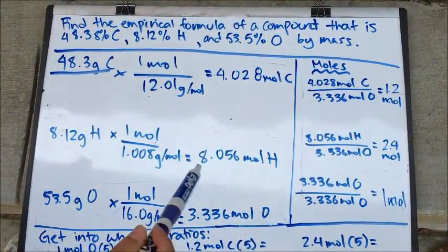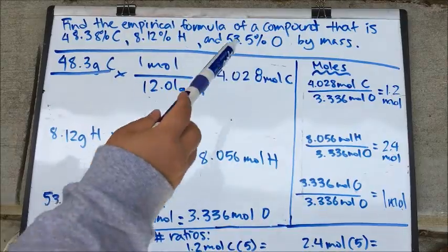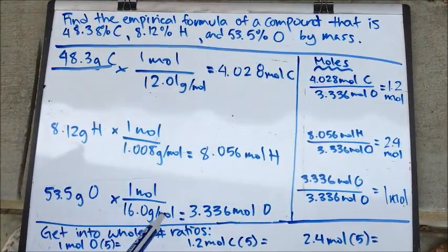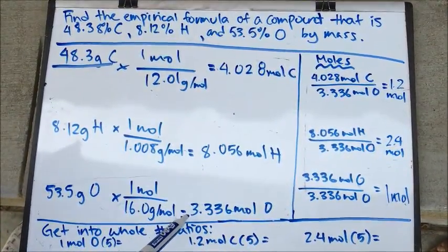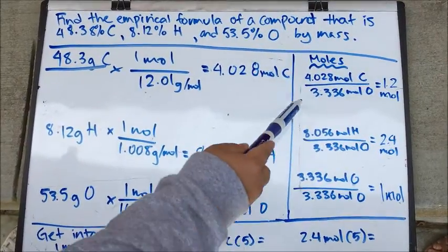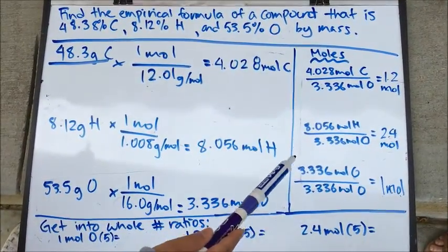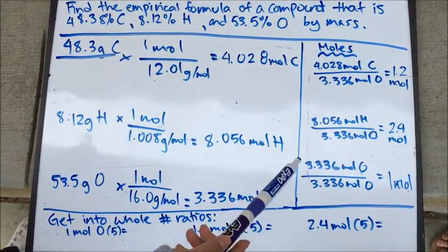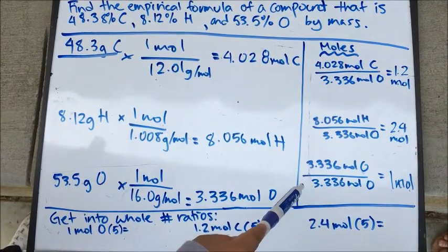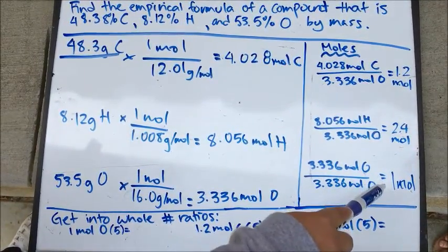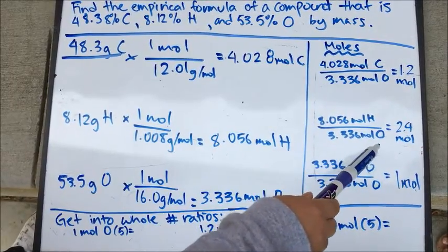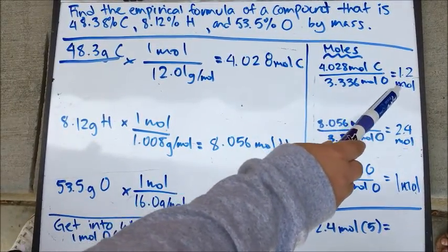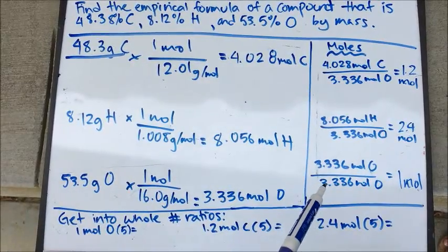After you get these moles, divide all the moles by the one that has the least number of moles. In this case it's oxygen. So divide all the moles of carbon, hydrogen, and oxygen by oxygen's value. Oxygen will turn out to be 1 mole, hydrogen will turn out to be 2.4 moles, and carbon will turn out to be 1.2 moles.